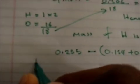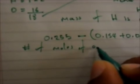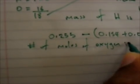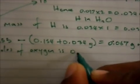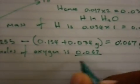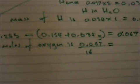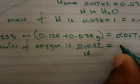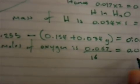Now we find the number of moles of oxygen. Number of moles equals mass divided by molar mass, which is 0.067 divided by 16, since oxygen has a molar mass of 16. That gives 0.0042 moles of oxygen.